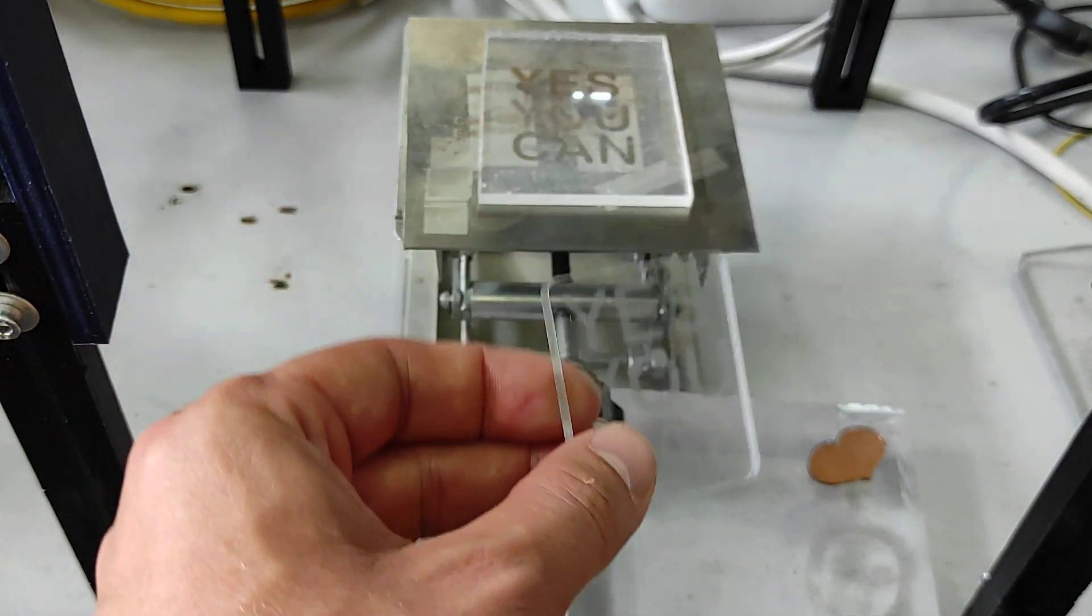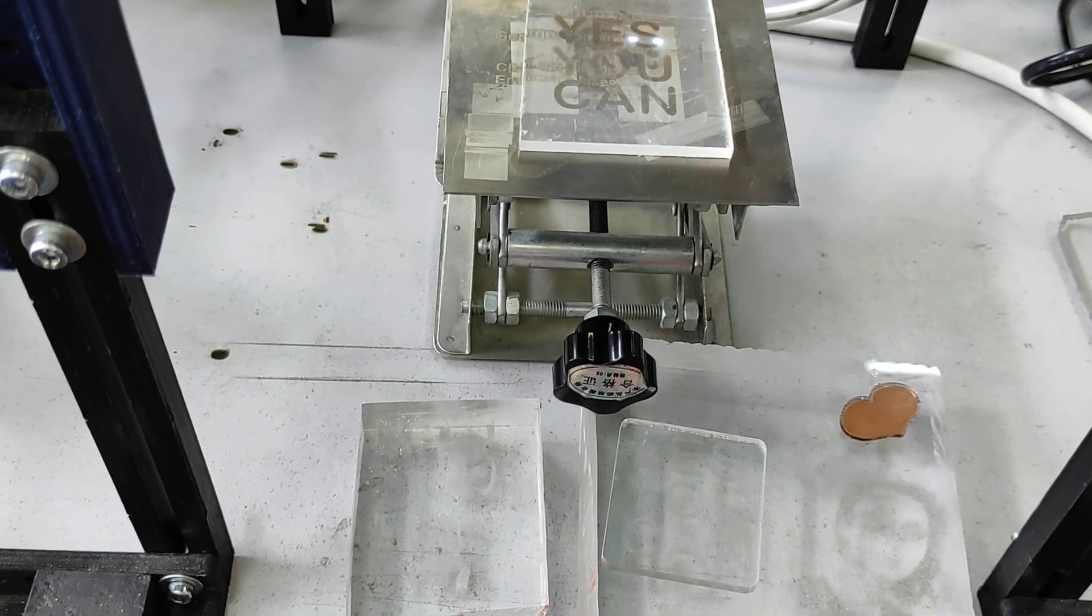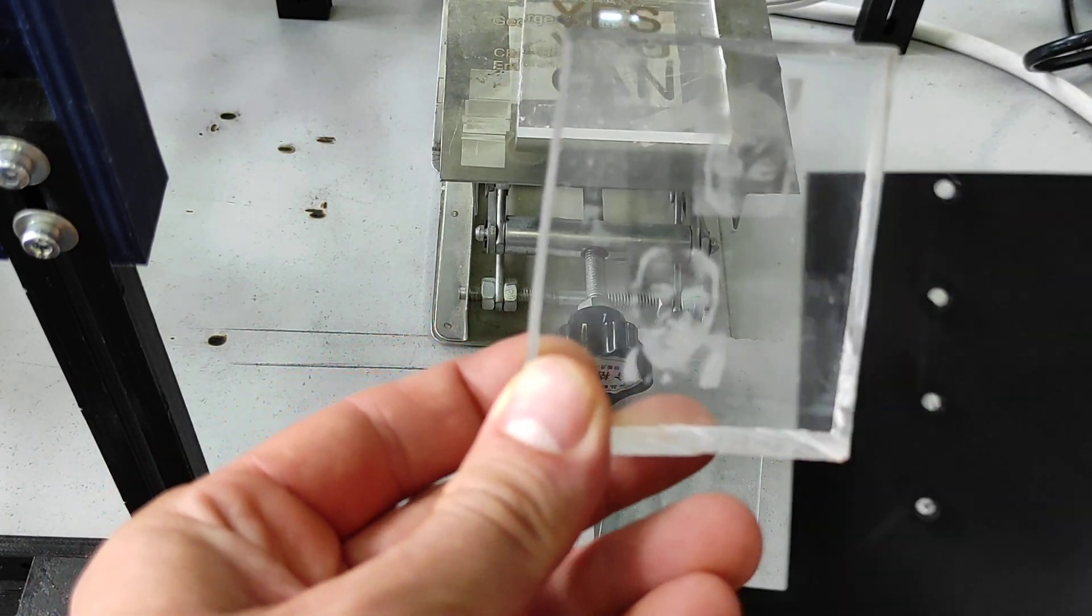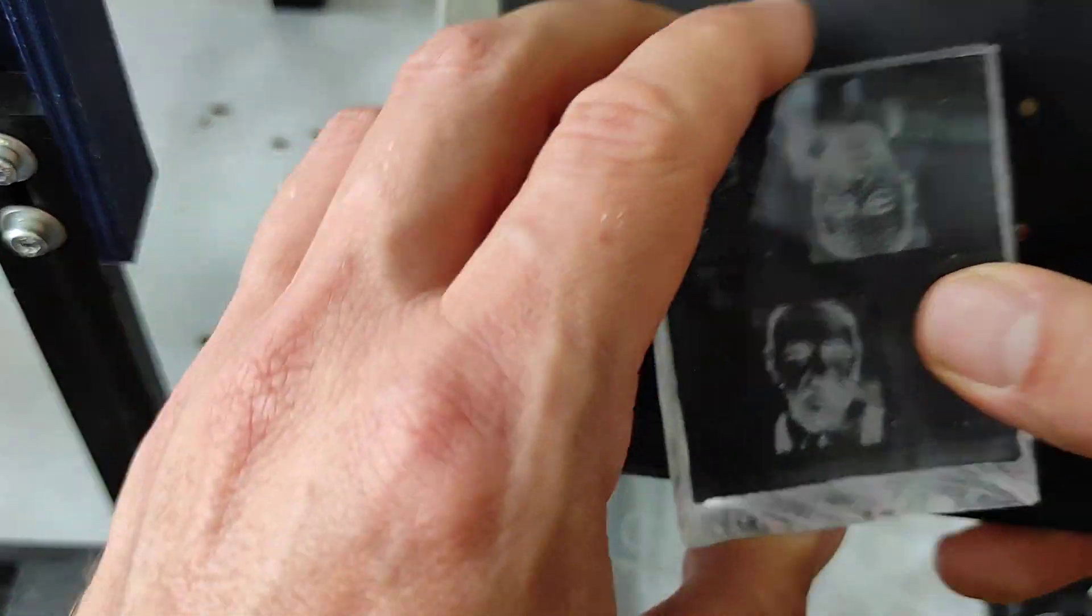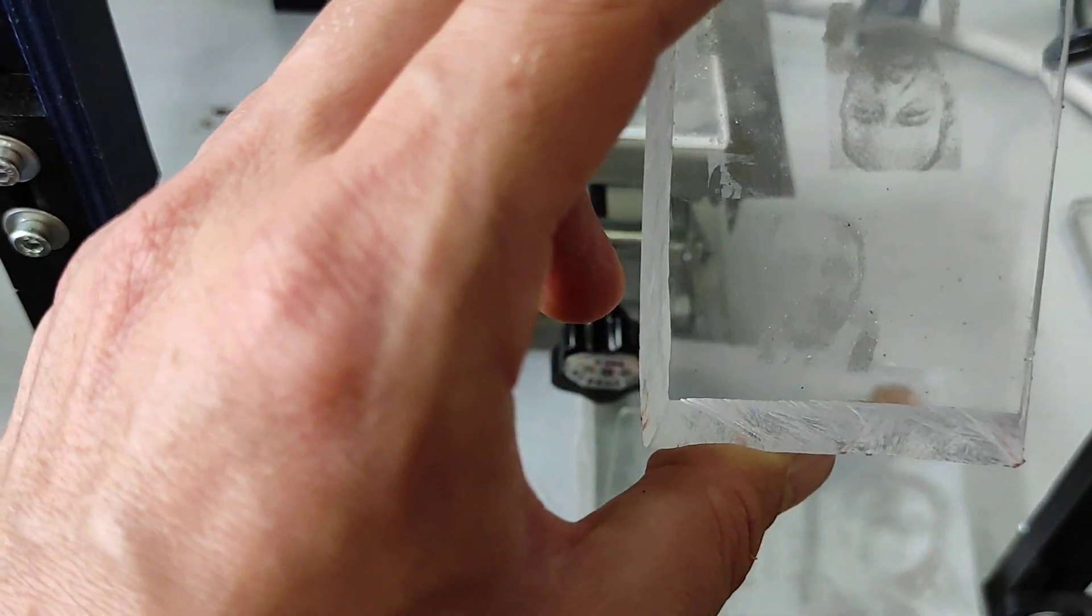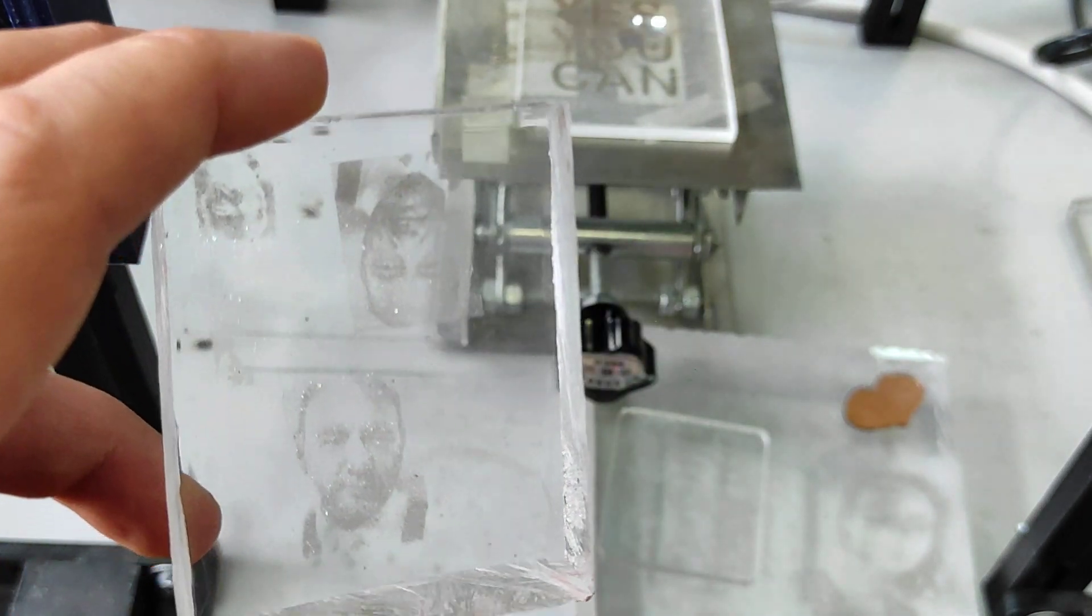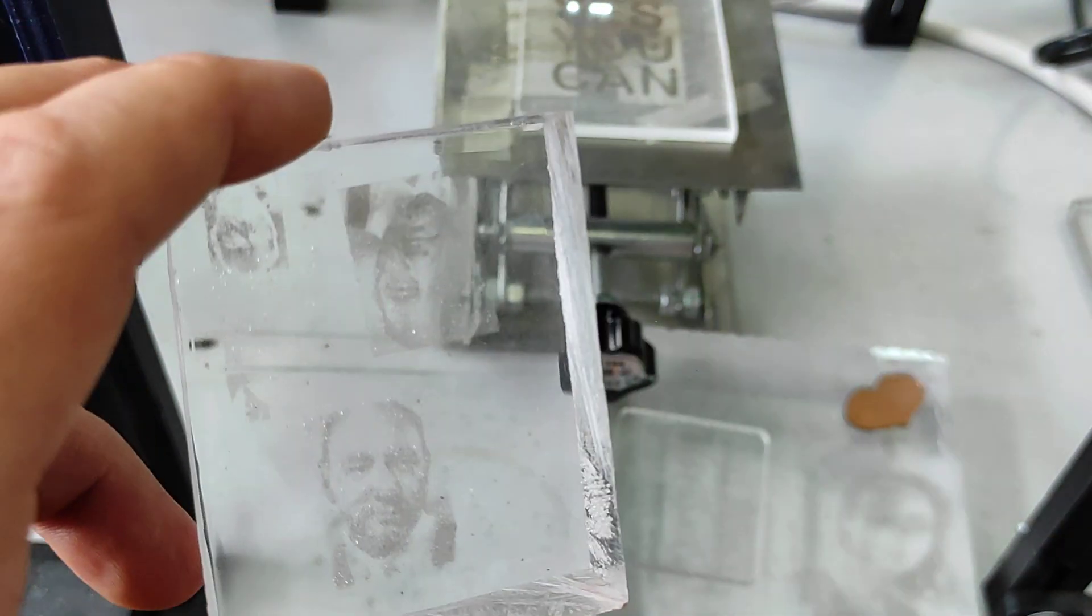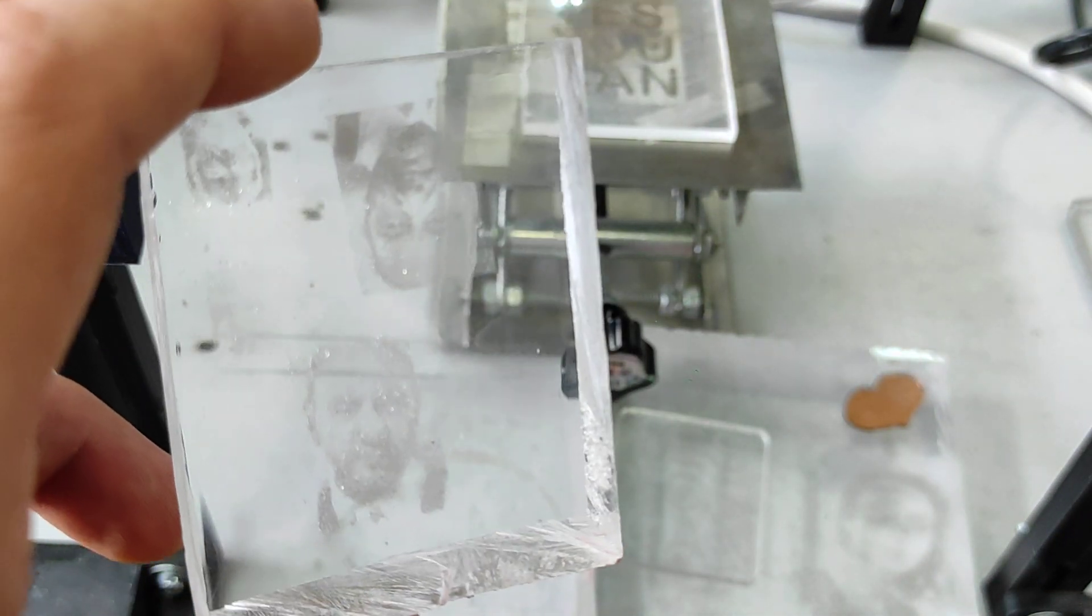In other examples we engrave inside using the same laser. It actually depends where you look - from some angles you cannot see it. This is Kevin Spacey. You can see it once you have a white background.